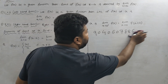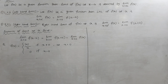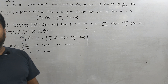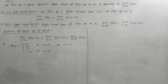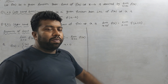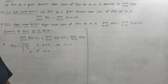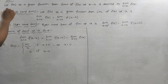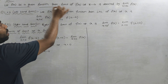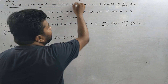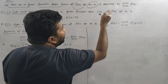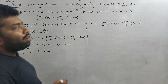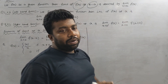So in the previous video, we have seen the limit of a function. Core 3 is unit number 4. So here we find the limit. The limit is given by the function f of x. Then the limit of f of x as x approaches a is denoted by limit x tends to a of f of x.